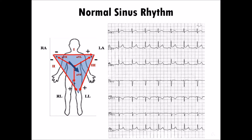Lead 2 records the voltage difference between the right arm and the left leg, with a positive pole on the left leg. As a general rule, an impulse going to the positive pole of a lead will create a positive or upright EKG deflection. Lead 2 will generate a positive deflection because the cardiac electrical impulse is moving from the right upper to the left lower part of the body, toward the positive pole of lead 2. For AVR, the complexes are predominantly negative because the impulse is traveling away from its positive pole.